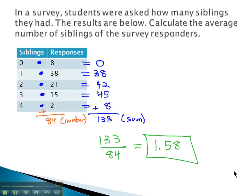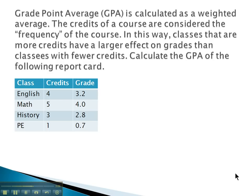Another type of weighted average that students interact with quite frequently is a GPA. The credits and a GPA are actually the frequency of the amount of time you're in the course. In other words, in this English class, this student earned a 3.2 for each of the 4 credits.